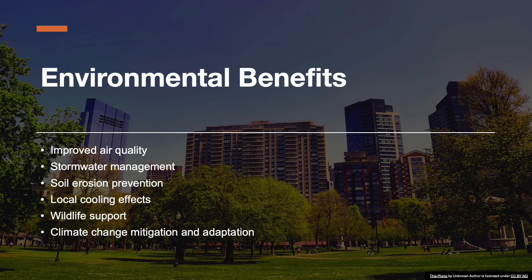Trees improve air quality by absorbing pollutants and filtering particulates. They reduce stormwater runoff by intercepting rainfall, which helps to prevent flooding. Roots stabilize the soil, which helps with erosion. The shade from trees lowers local temperatures, which can protect infrastructure and improve comfort. Trees also support biodiversity and help mitigate and adapt to climate change through carbon sequestration and localized cooling.